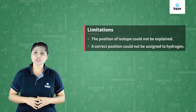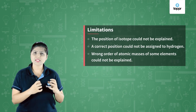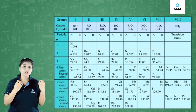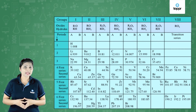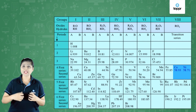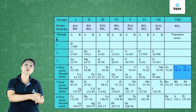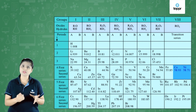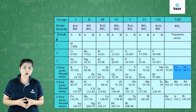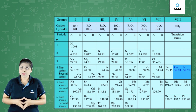Another limitation was that the wrong order of atomic masses of some elements could not be explained. When you check the table, you will find that cobalt, which has mass 58.93, was placed before nickel, which has mass 58.71. This is the wrong order if we are considering the increasing order of their atomic masses.